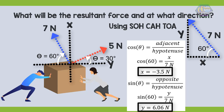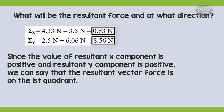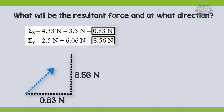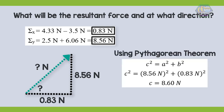Now let's add all the X and Y components. The summation along the X component is equal to 0.83 Newton, and the summation along the Y component is equal to 8.56 Newton. Since the resultant X component is positive and the resultant Y component is positive, the resultant vector force lies in the first quadrant. We can view this as a right triangle and use the Pythagorean theorem to get the resultant magnitude.